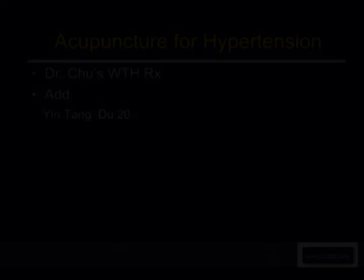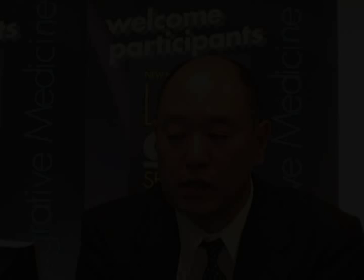You might also have complications with hypertension — that would be blood in the urine. Untreated hypertension can lead to serious diseases like stroke, heart disease, kidney failure, and eye problems. For hypertension, you would use my WTH prescription, and you can also add the points yintang and Du 20. The yintang and Du 20 combination in Master Dong's acupuncture is known to calm the shen.